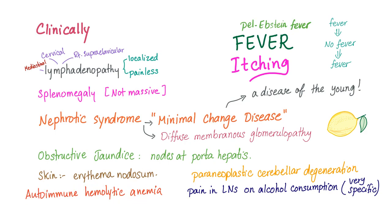There can be autoimmune hemolytic anemia. Paraneoplastic cerebellar degeneration and pain in the lymph nodes on alcohol consumption is a very specific sign — you drink alcohol and your lymph nodes start to hurt.